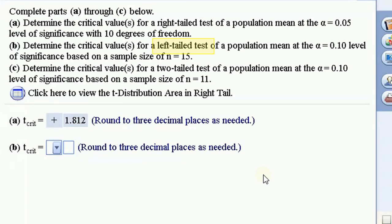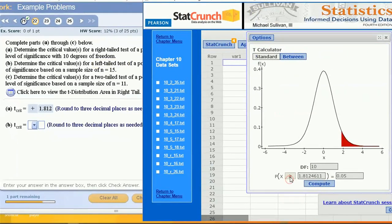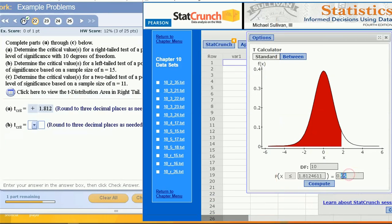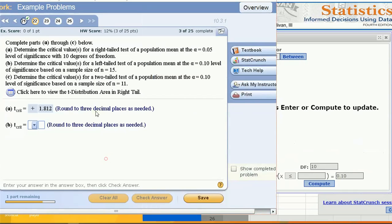Now for part b, I want to do a left-tailed test. Let's just change that first. Left-tailed test, less than or equal to, alpha level of 0.10. Let's just correct that to 0.10, and I'm told I have a sample size of 15. That is not my degrees of freedom. That's the sample size.